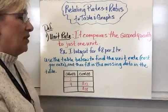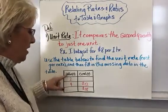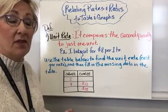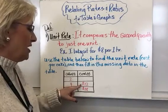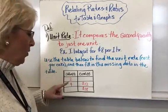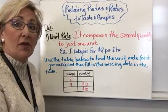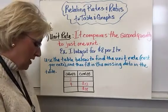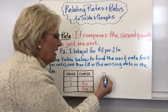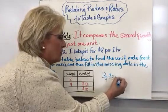We're going to use the table below to find the unit rate — the cost per cake — and then fill in the missing rate in the table. I know that four cakes equal $12. So how much would it be for one cake? If I divide 12 by four, it gives me three. So I know that each cake is worth $3. I can take 12, divide it by four, and that equals $3 per cake.